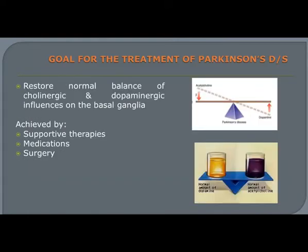The goal for the treatment of Parkinson's disease is to correct the imbalance between acetylcholine and dopamine. This can be accomplished by either increasing the supply of dopamine or blocking acetylcholine levels, achieved by giving anti-Parkinson's drugs. Physiotherapy, a diet rich in fiber, and surgery are also helpful.